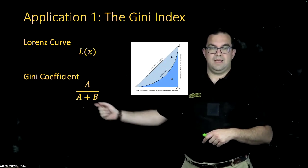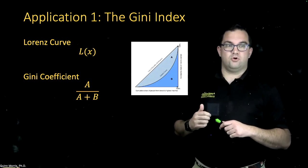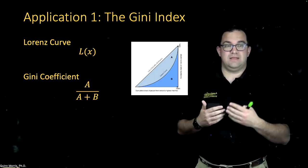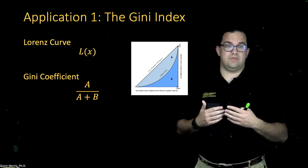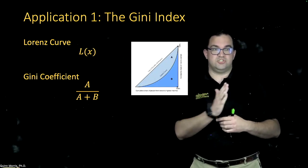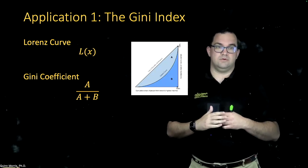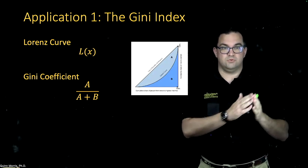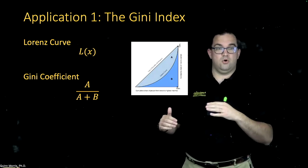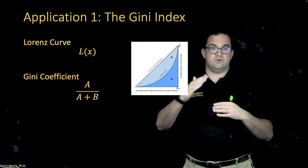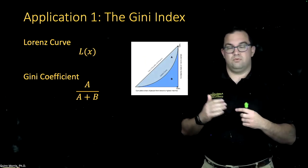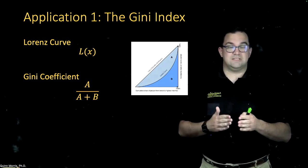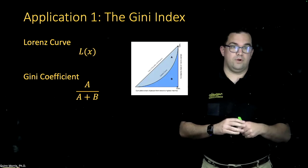Area A is that upper crescent between the line of equality and the Lorenz Curve, and B is the area below that crescent in the triangle. So A plus B is the total area of that triangle. The Gini coefficient essentially measures the ratio of A — the area above the Lorenz Curve — to the total area. When A is large, that means there's a lot of inequality because the Lorenz Curve is shifted over, with a lot of wealth concentrated towards the very top percentage of resource holders. When the Gini coefficient is low, the distribution is fairly equal; when it's larger, we're seeing more inequality.